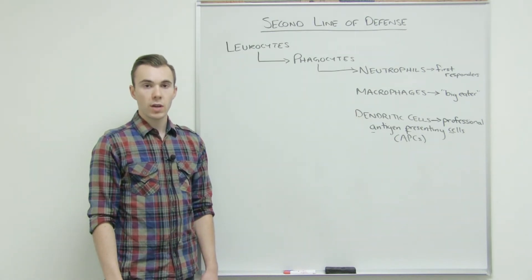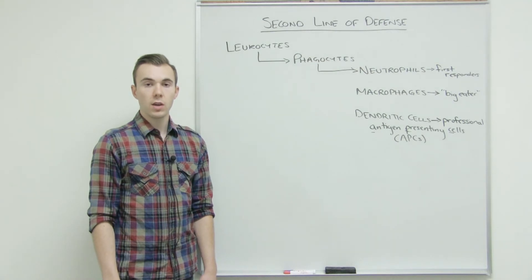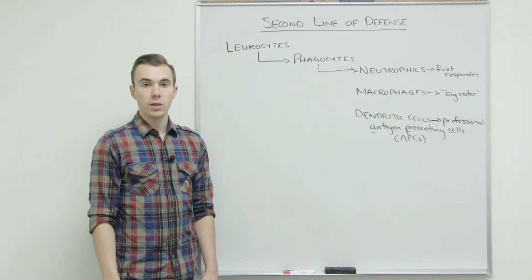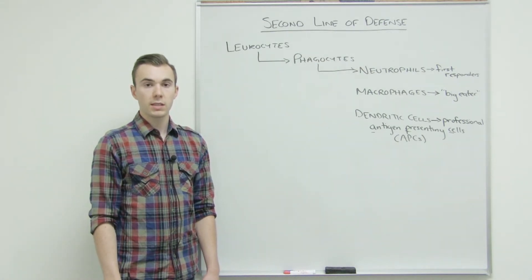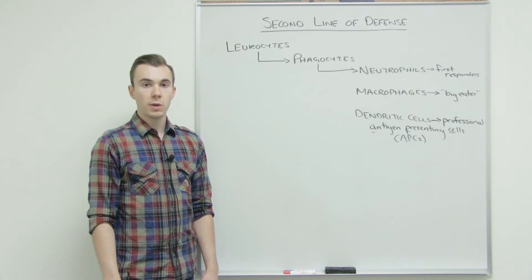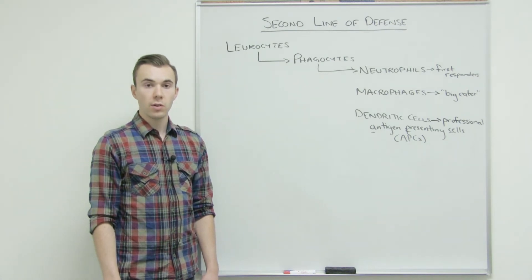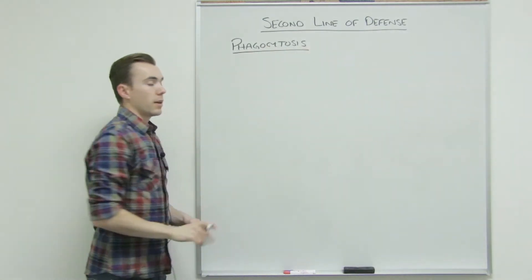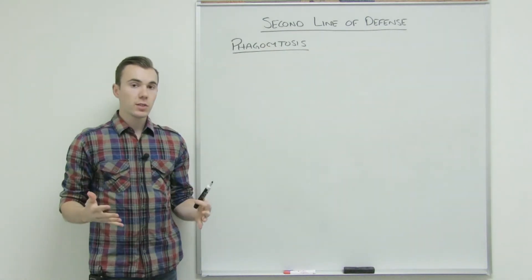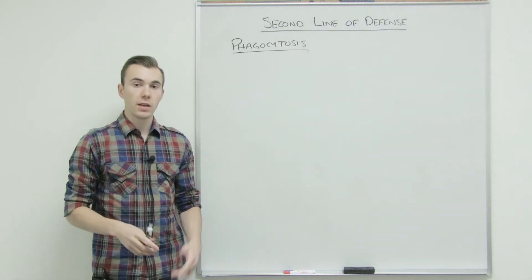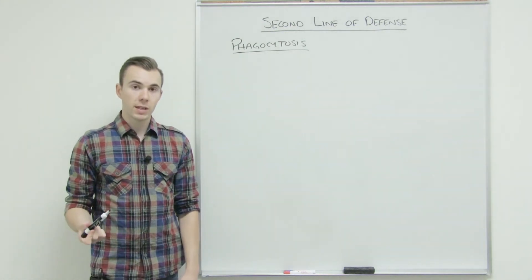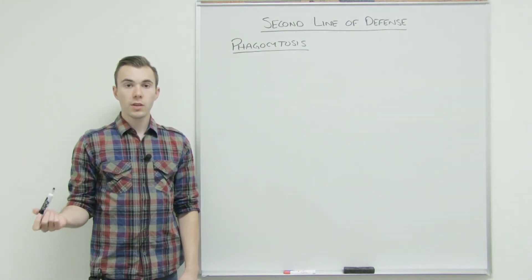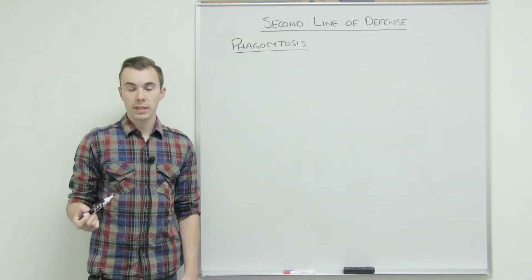So these cells are going to undergo phagocytosis, which is the process of cell eating, which is what we're going to discuss next. If you need a moment to draw this picture, I recommend you pause the video and do so now. As I just mentioned, phagocytosis is the process of cell eating, and this is going to be done by phagocytes, which include your neutrophils, your macrophages, and your dendritic cells.